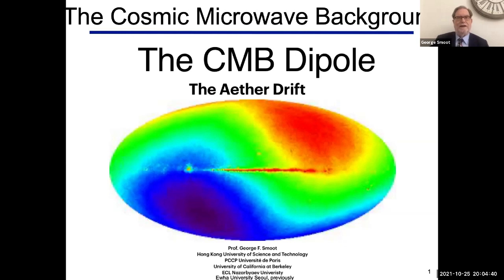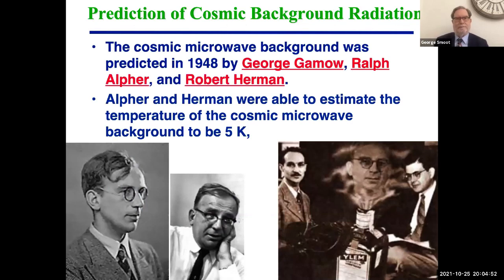That's what led to the development of technology that allowed the next generations of experiments. The prediction of the cosmic microwave background radiation was made in 1948 by George Gamow, Ralph Alpher, and Robert Herman. There were three separate announcements where the temperature came down, and Herman was able to do a more careful calculation and estimate the temperature of the CMB should be about 5 Kelvin—5 degrees centigrade above absolute zero. There's a picture of young Gamow, older Gamow, Alpher and Herman, and Gamow magically coming out of a bottle of fancy whiskey.